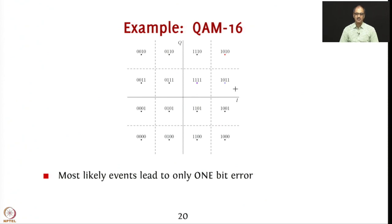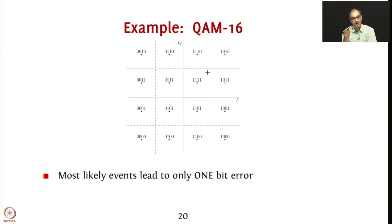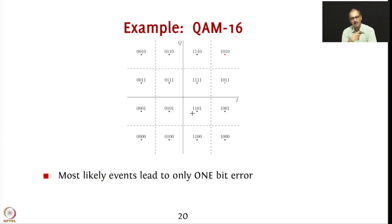For QAM16, computing bit errors is cumbersome but feasible. For the MSB you can use a BPSK-like approach since 0 is on the left and 1 is on the right. For other bits you must examine regions more carefully. Alternatively, simulation gives the BER directly for any desired SNR.